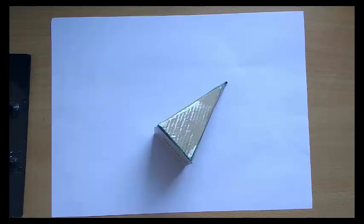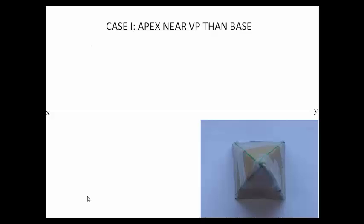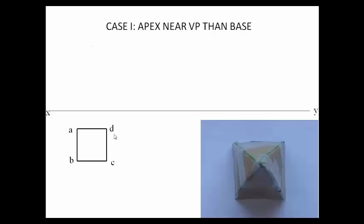We begin with case 1 — apex nearer the VP. In step 1, the square pyramid rests with its base on the horizontal plane, so the true shape of the square base is seen from the top. We draw the square in the top view below the XY line, labeling corners a, b, c, d, and locate the apex o — giving us slant edges oa, ob, oc, and od.